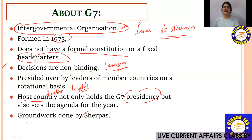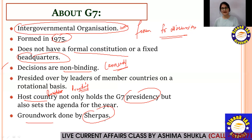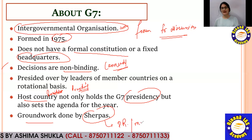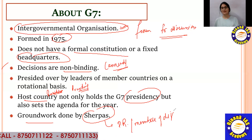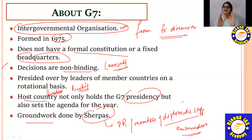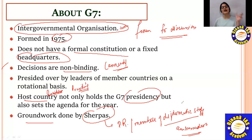Who does the groundwork? Groundwork is done by Sherpas. Sherpas are basically personal representatives or members of the diplomatic staff — Ambassadors who are personal representatives of the countries. They decide what will be on the agenda and what topics will be discussed at the meeting.